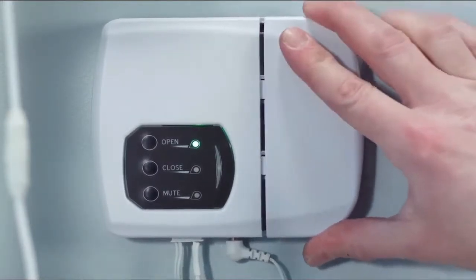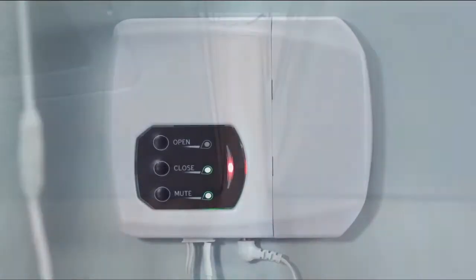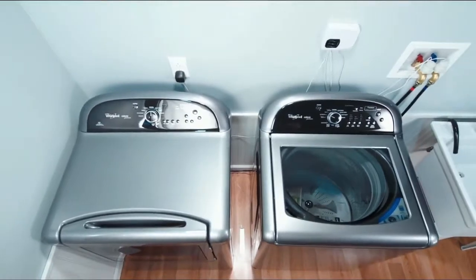Install four fresh double-A alkaline batteries. Test the system, and your house is now protected 24/7 from water leaks caused by your washing machine.